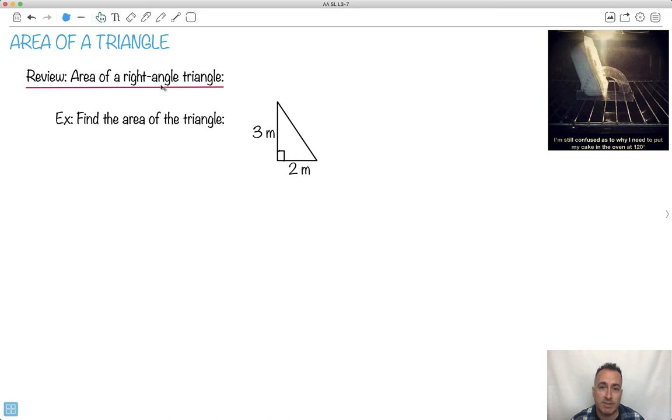After that, we'll look at what happens if it's not a right angle triangle. Ever seen this one? I'm still confused why I need to put my cake in the oven at 120 degrees. A protractor.